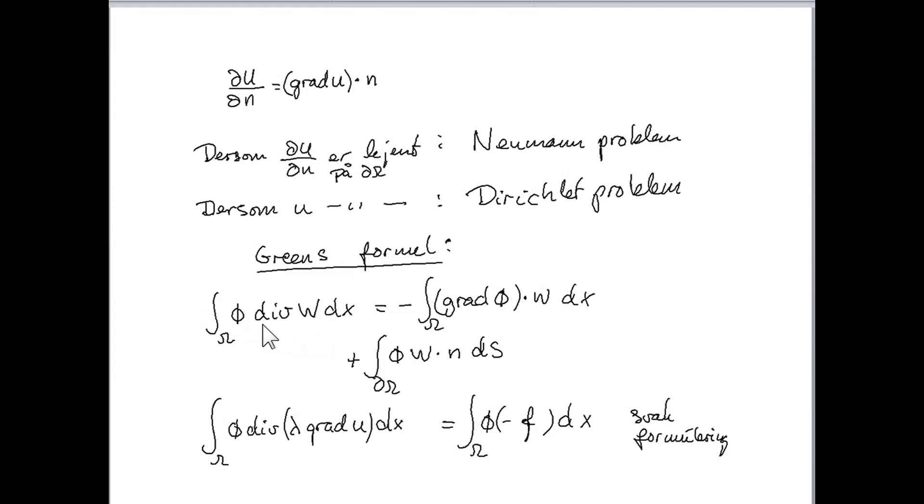It takes the following form. If we have some function which we call phi, and we have a vector function which we call w, by the way, this function phi is assumed to be a scalar function, then the integral of the product of this function with the divergence of w turns out to be equal to minus the gradient of phi multiplied scalar, this is a scalar product with w, and this integral is taken over omega, plus this boundary integral.